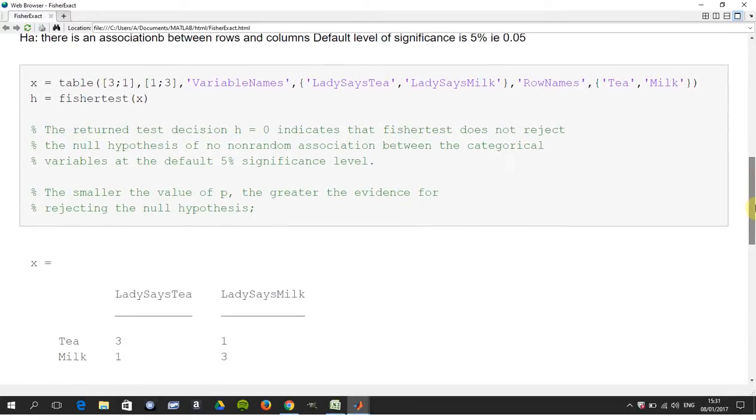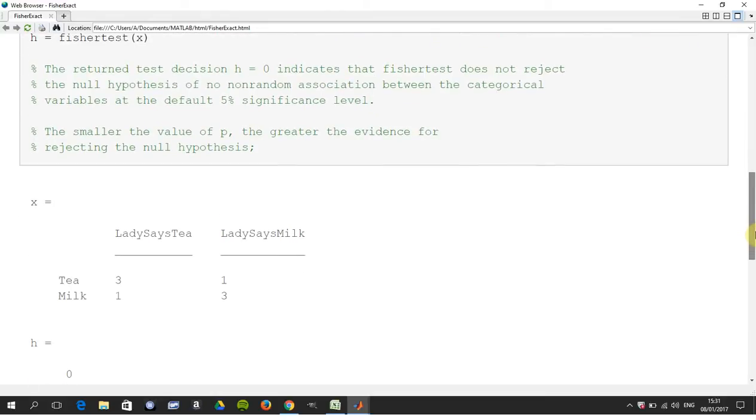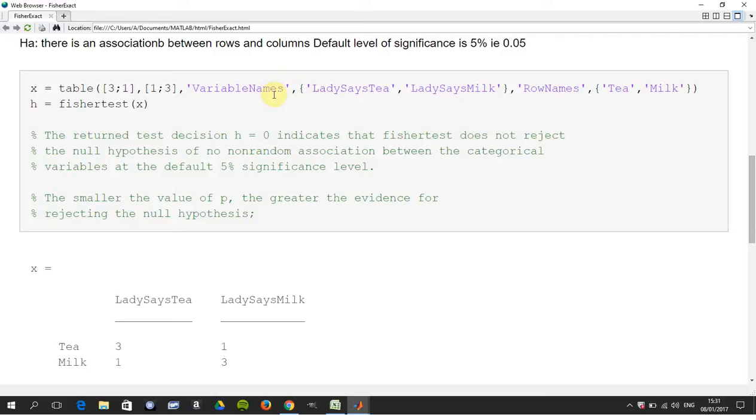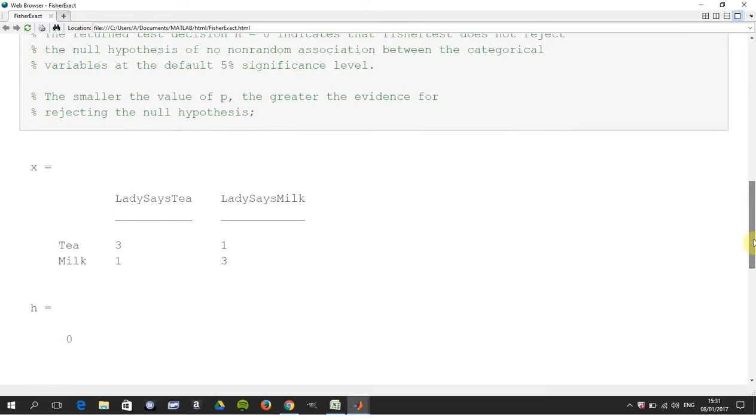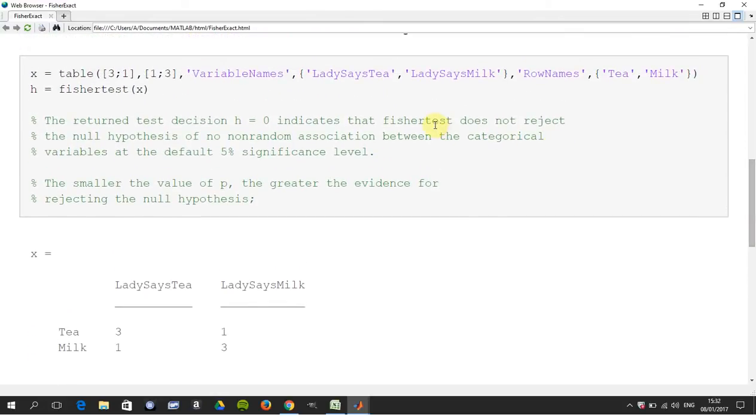And I've put in some comments here, it just returns there's the table that I created. So here is created by the table command and then the h equals fishertest, that's zero or one. And I've heavily commented here so it's zero so you do not reject the null hypothesis, so you're saying the lady is guessing or she's making it up as she goes along, that's what we're saying.